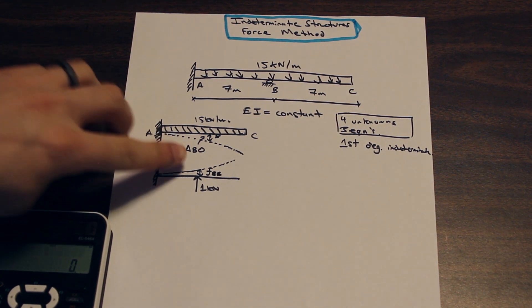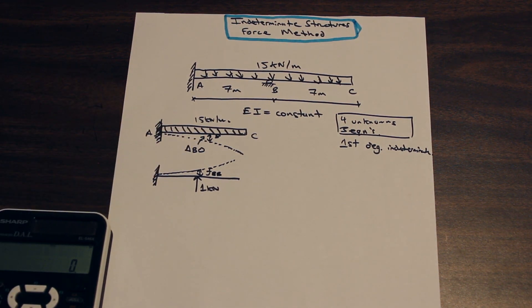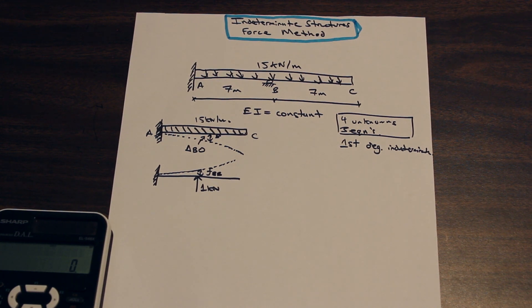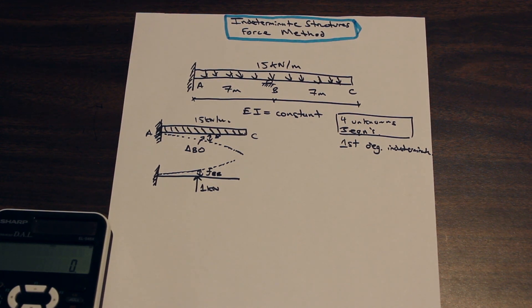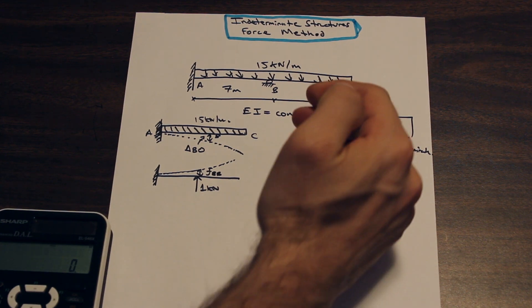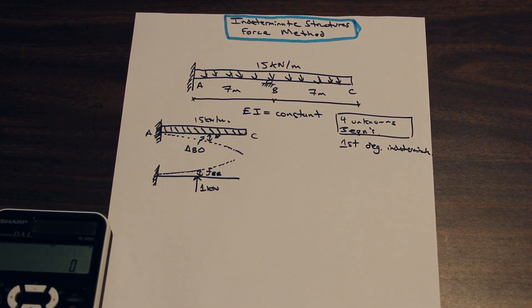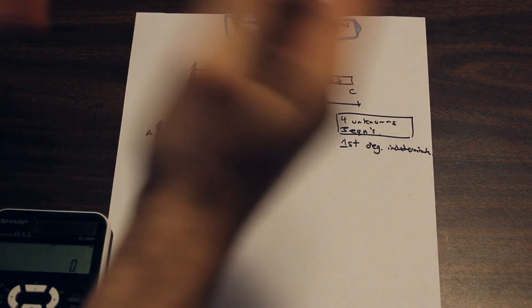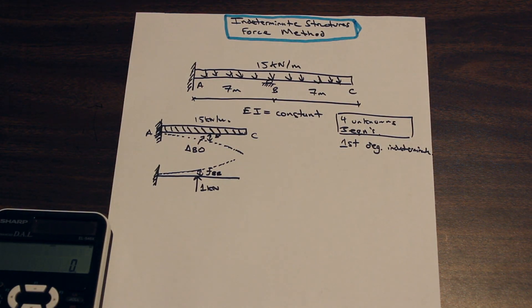We're going to label that FBB. So we have FBB, we have delta bo. And well, what do we do now? So what we do now is we need to understand the compatibility equations, like what the equations that we need in order to solve this problem. So if we had a second degree indeterminacy, we would have two formulas. For a first degree indeterminacy, we only have one, we only need one additional equation in order to solve the system.